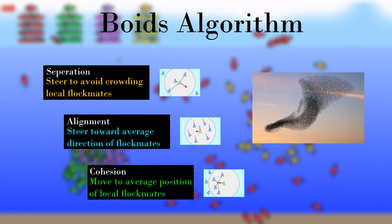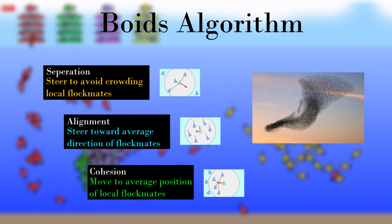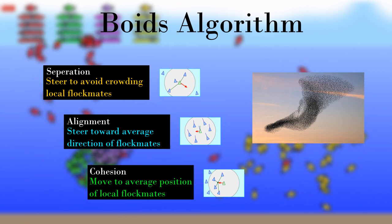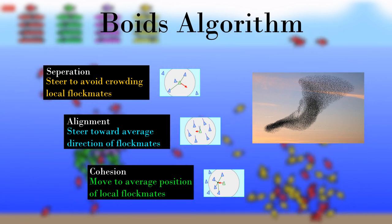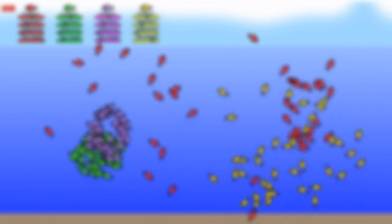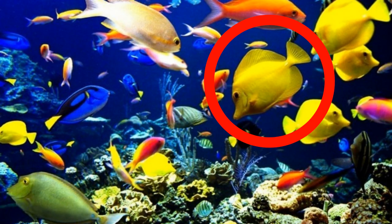Boids algorithm allows us to simulate huge flocks of birds and fish and other things. Each fish will be a separate object with different properties.